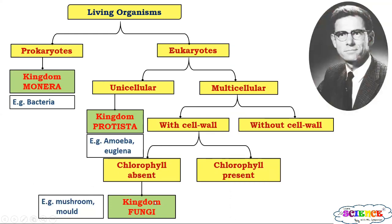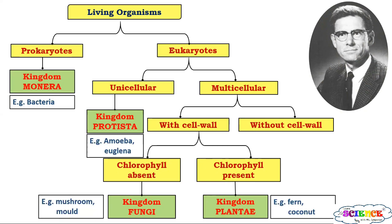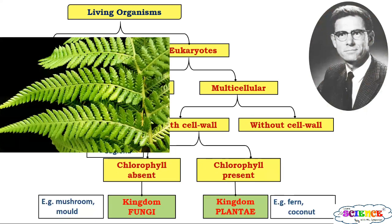Next, if chlorophyll is present, those organisms are placed in Kingdom Plantae. Kingdom Plantae includes all the green plants — ferns, coconut, and so many different types of plants around us. They were grouped in Kingdom Plantae.